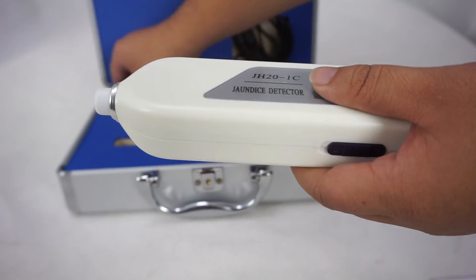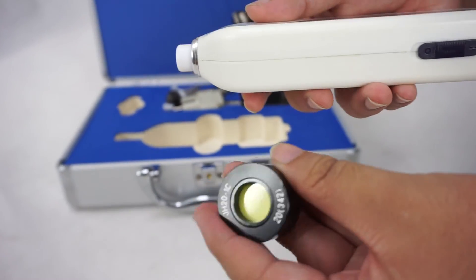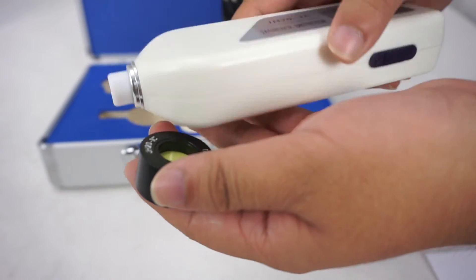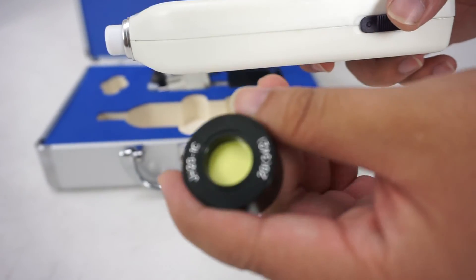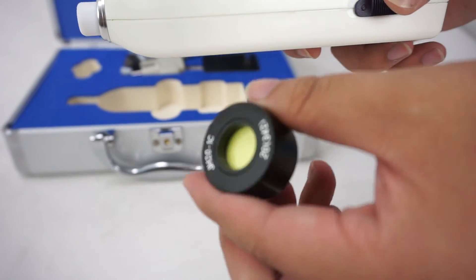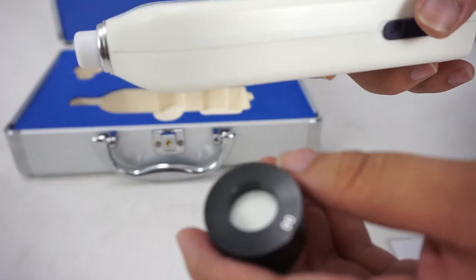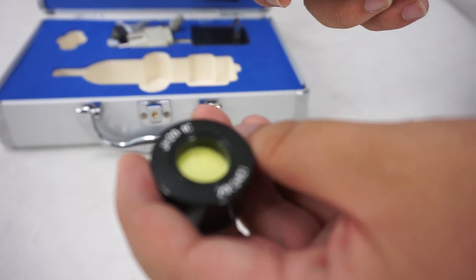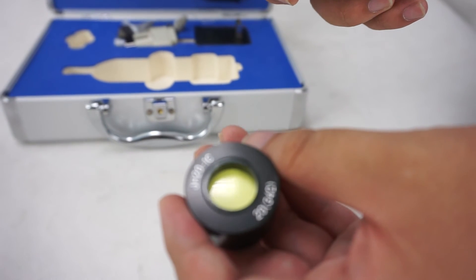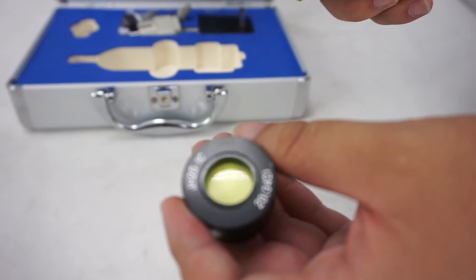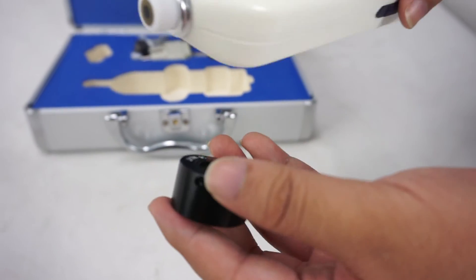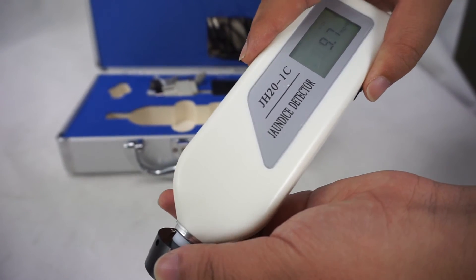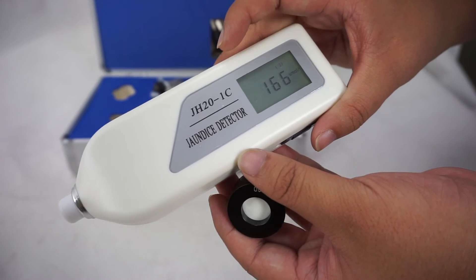We use the checker plate. The checker has two sides. One is yellow and another is white. The instrument should be inspected before detecting. We will see the parameters on the display.